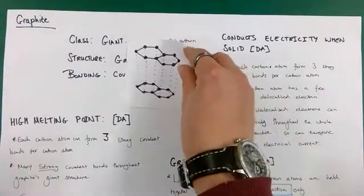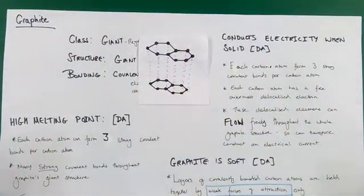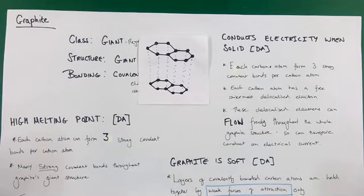Secondly, quite unusually for a non-metal like carbon, it conducts electricity. This allotrope, this form of carbon, conducts electricity. That's rather unusual for non-metals. Why? Well, the bonding is the key aspect here.